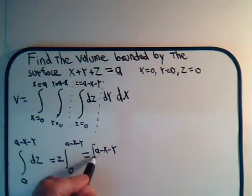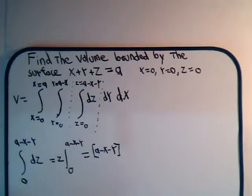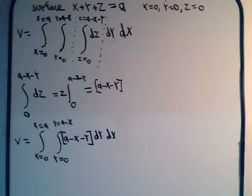So we'll take this expression and replace that here, and that will leave us with this double integral now: a minus x minus y, dy dx, where y goes from 0 to a minus x, and x goes from 0 to a. Now we have a double integral that we have to contend with.